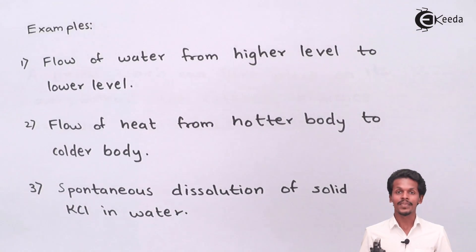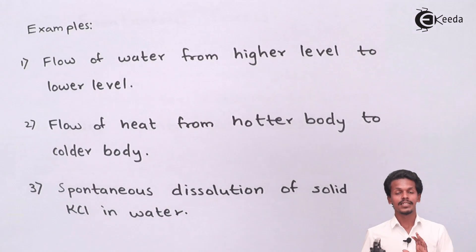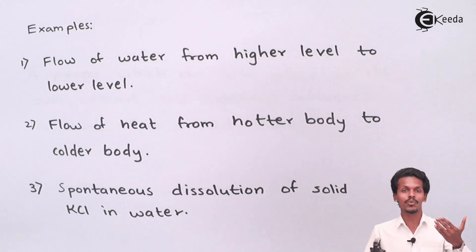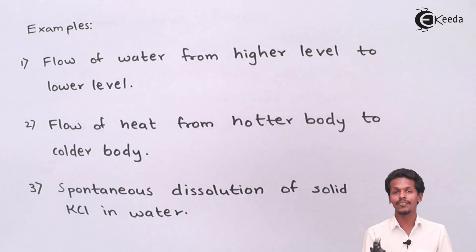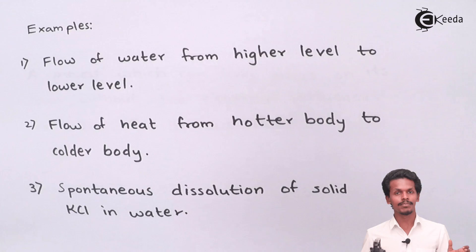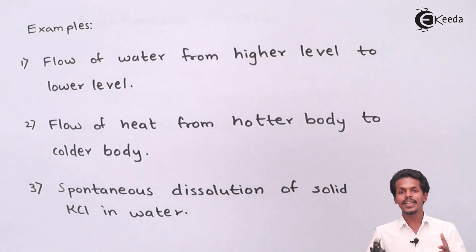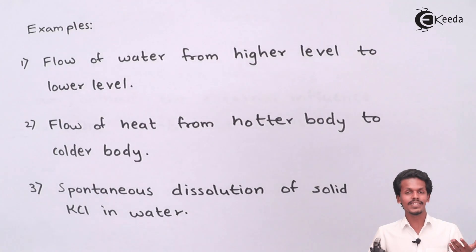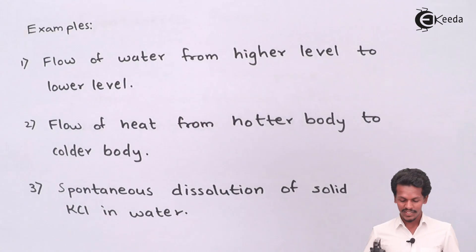If we want to stop the heat from travelling from the hot body to the colder body, external influence would be required. Without that, the heat naturally travels toward the colder region. This confirms that a spontaneous process is one that takes place by its own.